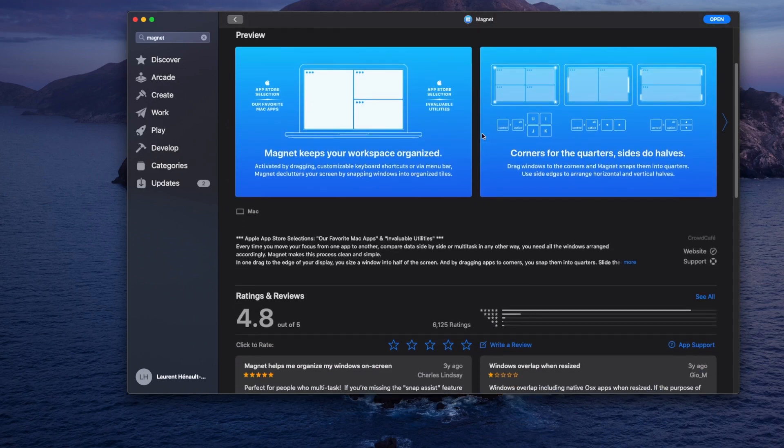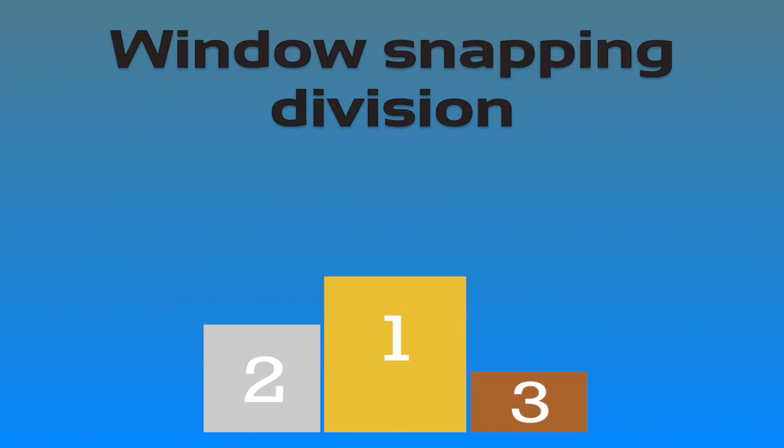I know half the people watching this video are screaming internally right now — Windows has had that forever, and you know, you're right, so you win that one Windows, congratulations. But unfortunately I don't decide which OS I use every day based on whether it has window snapping out of the box. So I'm kind of stuck finding other ways to make it work on macOS, and Magnet does an incredible job at fixing that missing feature.